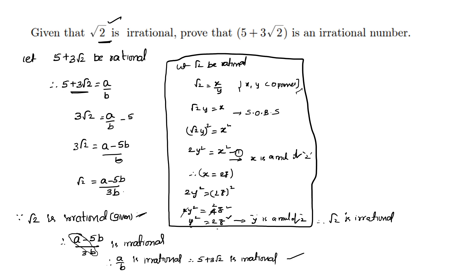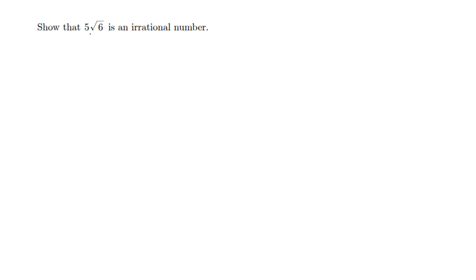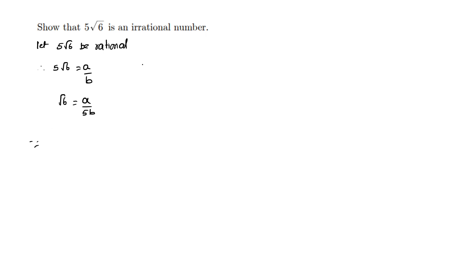A similar type of question: show that 5 root 6 is irrational. Let 5 root 6 be rational. So therefore 5 root 6 is equal to some A by B. Therefore root 6 is equal to A by 5B.